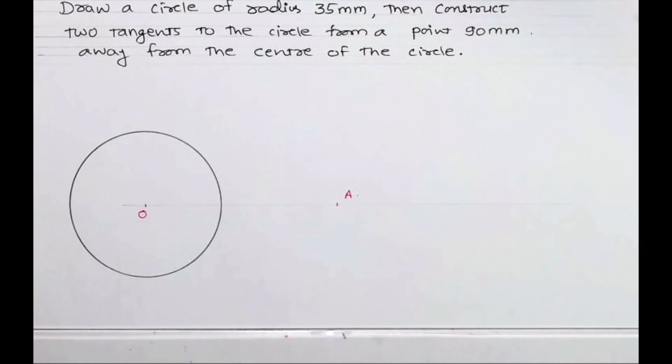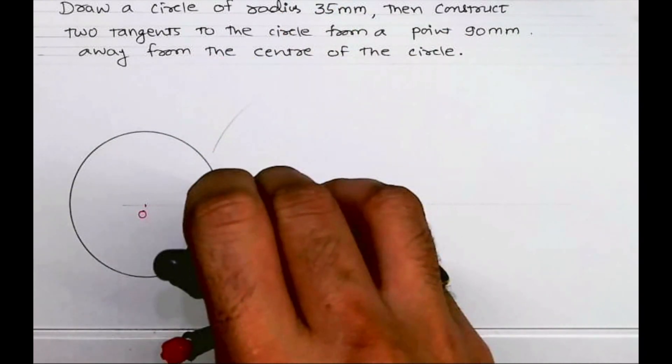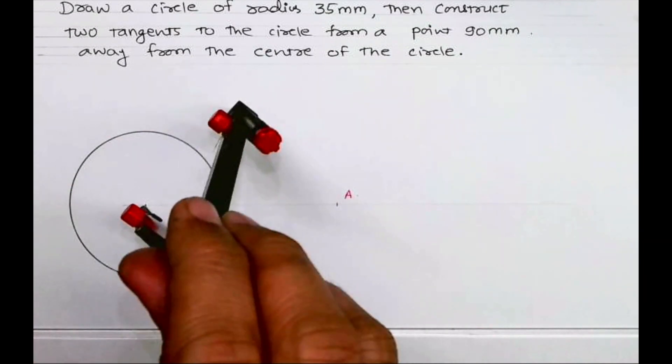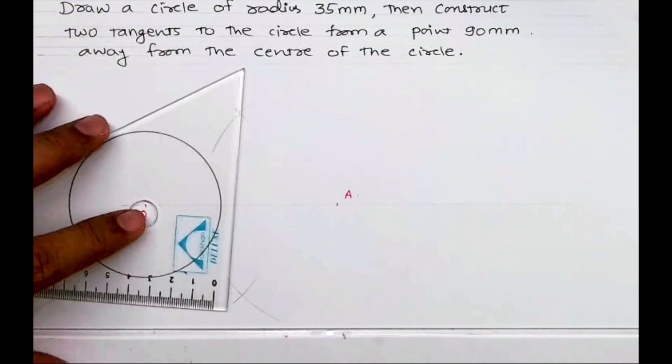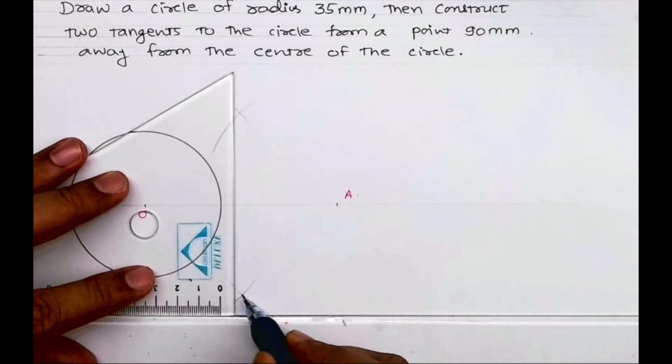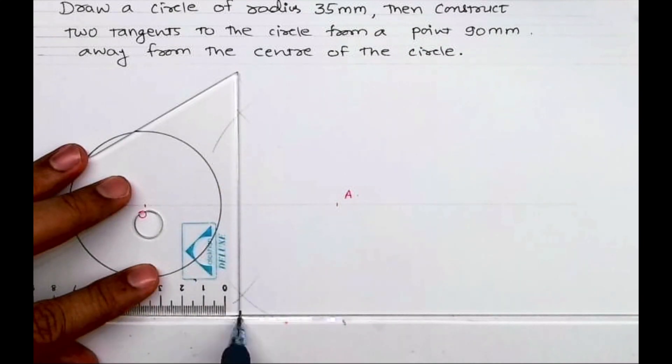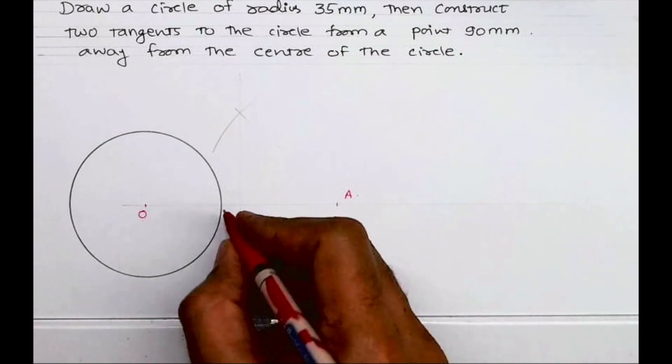What I will do is bisect OA. We will draw a vertical line. Now wherever it will intersect OA, that is point M.